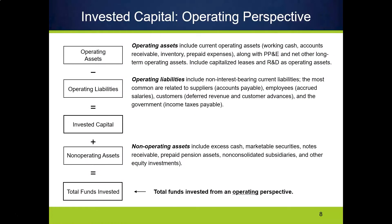We will subtract all operating liabilities. One of the key things to distinguish the liability side: if it pays interest, it is not an operating liability — it is a financing liability. The interest part is the specific indicator that it's financing and not operating. So operating liabilities are only non-interest-bearing liabilities. The most common are current liabilities related to suppliers like accounts payable, employees like accrued salaries, customers like deferred revenue or customer advances, and the government like income tax payable. If it pays interest, we're going to include it as debt.